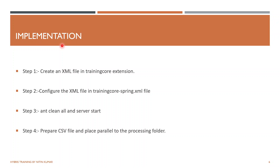These are the steps to implement Hot Folder. First, we need to create an XML file in the training core extension. Next, we need to configure that XML file in the training core spring.xml so it gets picked up. We then do an ant clean all and server start. After this, we prepare our CSV, place it parallel to the processing folder, and it will get imported.